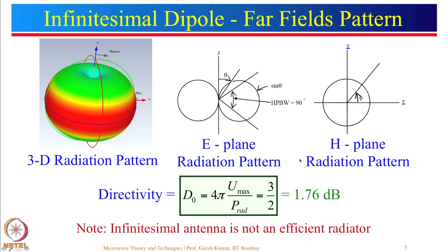Let us look at the radiation pattern. For a current carrying conductor, field is maximum perpendicular to the conductor and minimum along its axis, giving the classic 3D donut pattern. In H-plane it is a uniform pattern, while in E-plane it forms a figure-of-8. Directivity of the infinitesimal dipole is 1.76 dB. Remember this is for a very small dipole, not lambda by 2. The infinitesimal dipole is not an efficient radiator and is used only for derivation purposes.